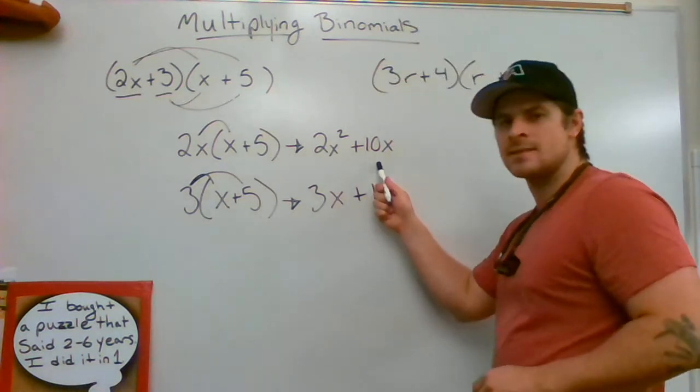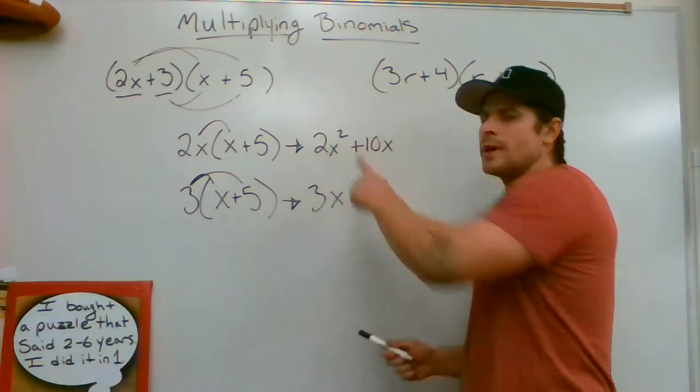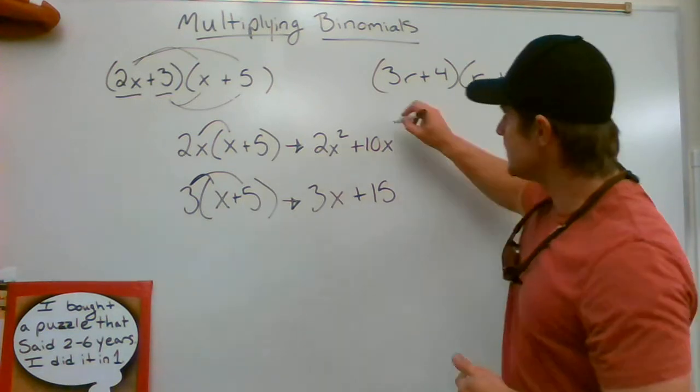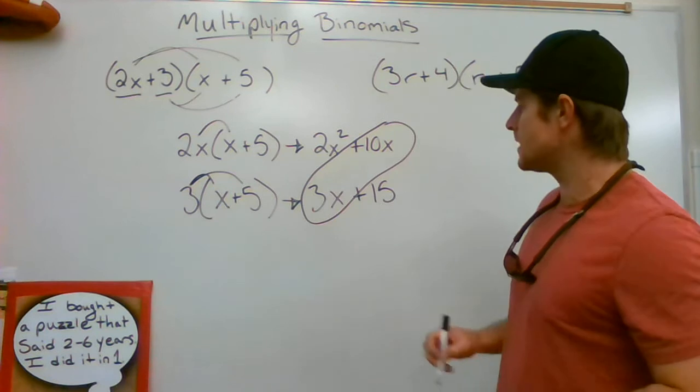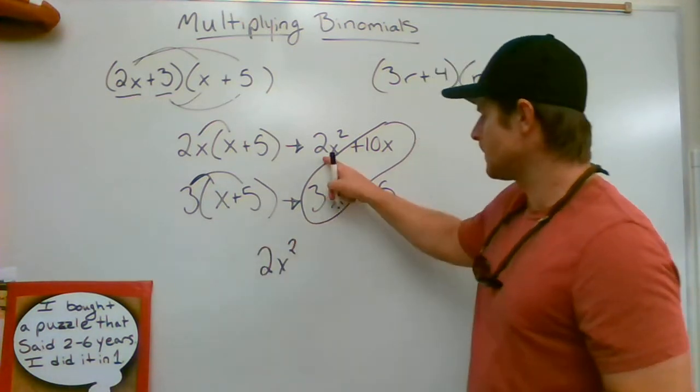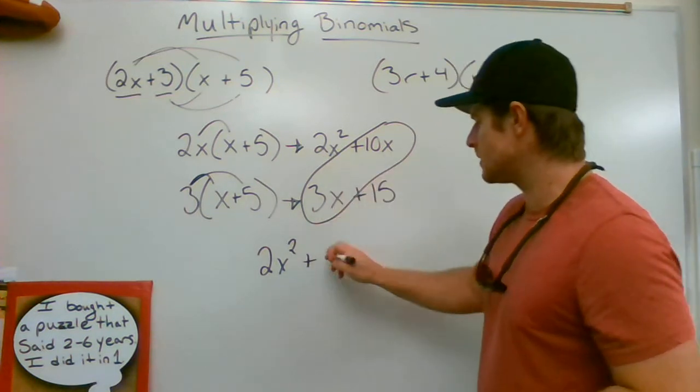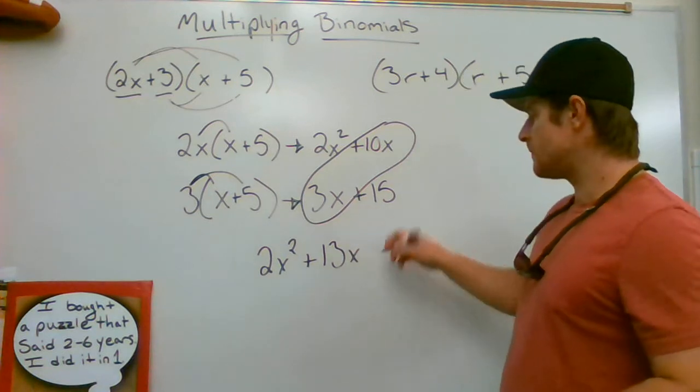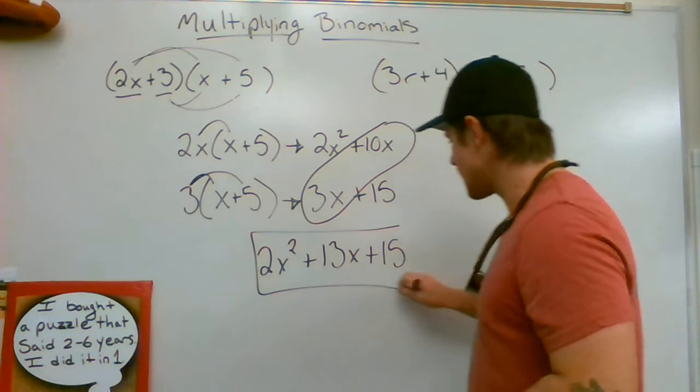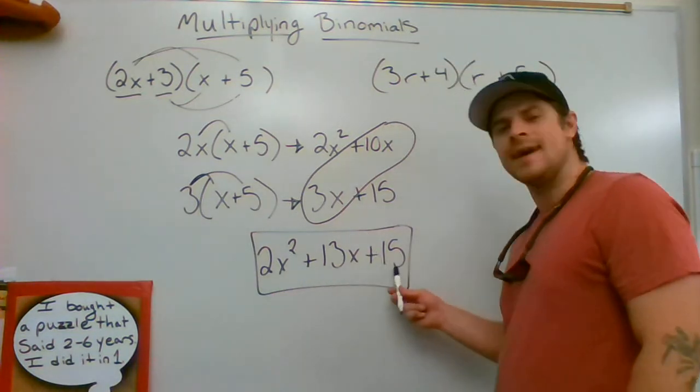Notice that this term has an x and this term has an x, while this term has x squared—it is not like the others, they are not like terms. But these two are, so we're going to combine those together. Our final result would be 2x squared plus 10x plus 3x, which gives me 13x, plus 15. Our result is a trinomial with an exponent of 2, exponent of 1, and a constant at the end.